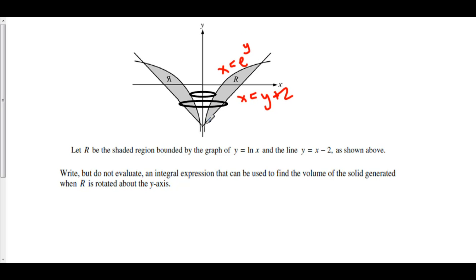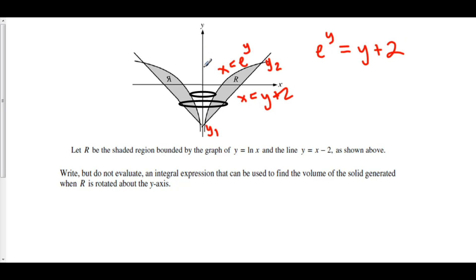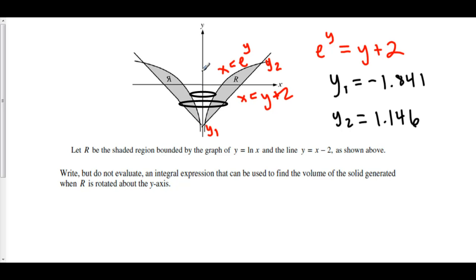We know that we have an intersection point at the bottom, which is where we begin, and an intersection point at the top, which is where we end. We are integrating with respect to y, stacking up washers along the y-axis. Setting e to the y equal to y plus 2, we find that y₁ equals approximately negative 1.841 and y₂ equals approximately 1.146. So now we have our limits of integration.